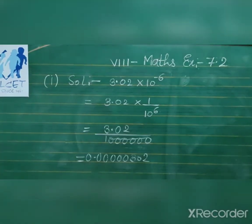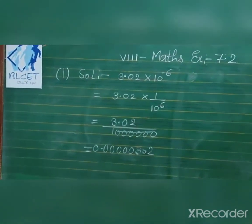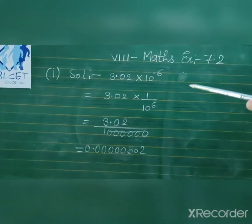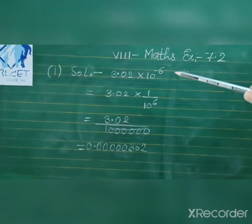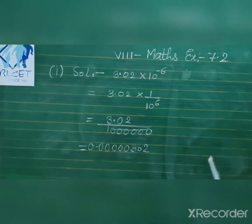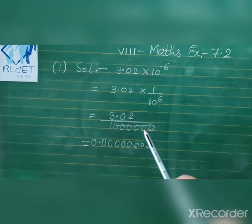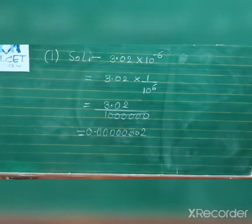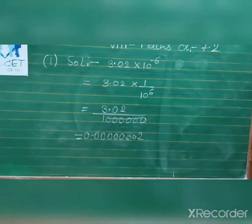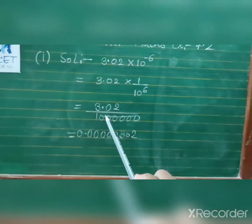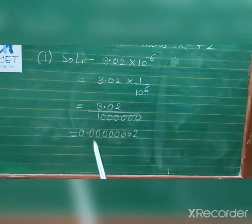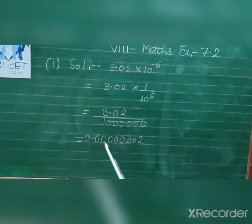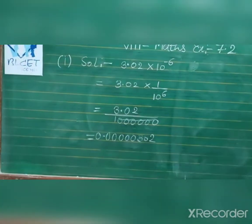For part one of question two, the standard form is given and we must write in general form. The number is 3.02 × 10 to the power minus 6. The minus 6 in the denominator takes the plus sign, so it means 3.02 divided by 10 to the power 6, which equals 3.02 divided by 1,000,000. Moving the decimal six places to the left: there is already one digit, so we add five more zeros and place the decimal. The answer has one digit before six decimal places.